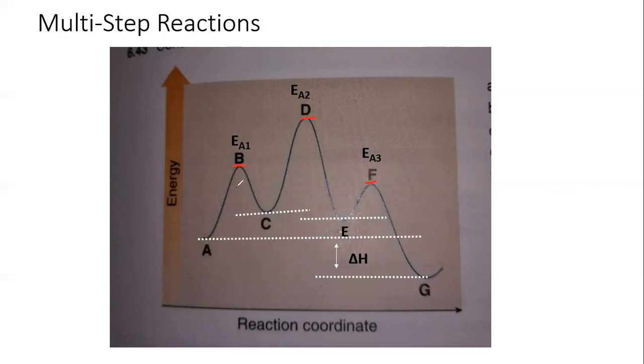So step one, we go from A to C. Step two, we go from C to E. And then step three, we go from E to G. So you can have multiple steps in an energy diagram.